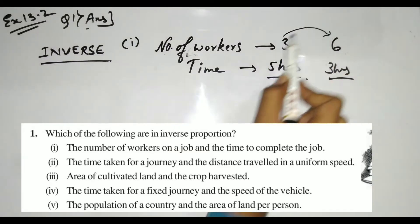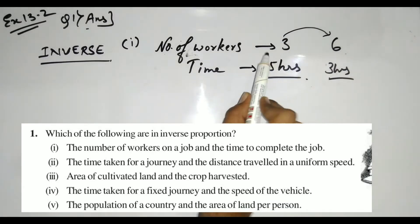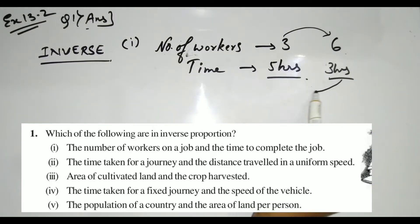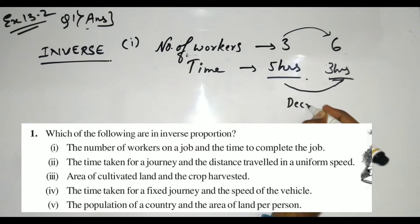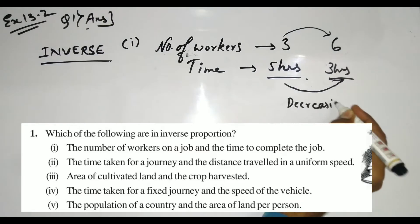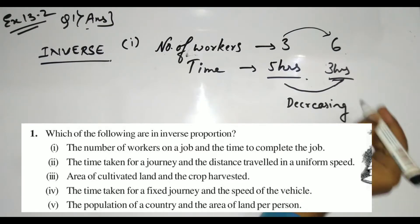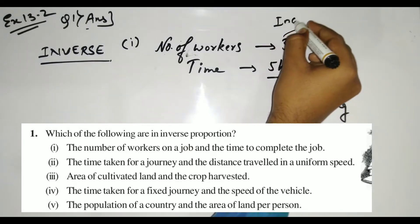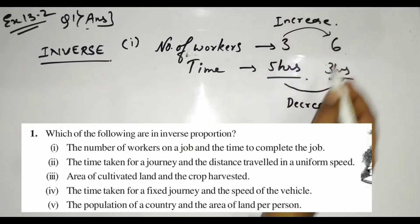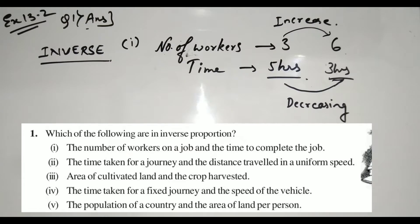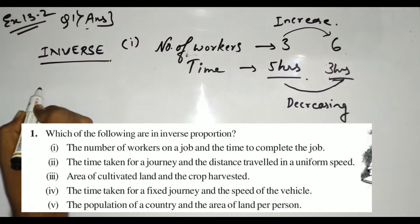One quantity is increasing — I am increasing the workers — and this quantity is getting reduced, it is decreasing. So one quantity is increasing, another quantity is decreasing. That means this is inverse proportion. So the first part will be inverse proportion.